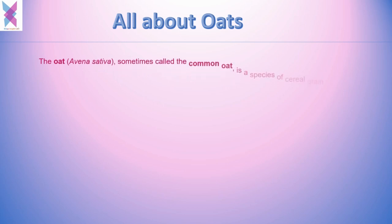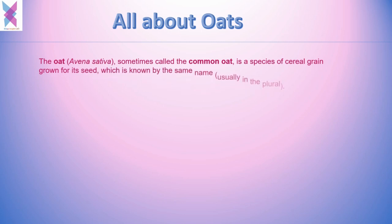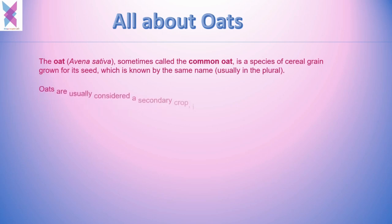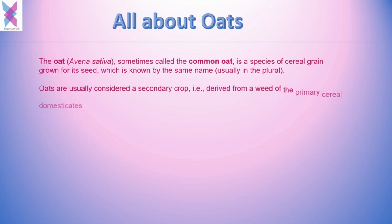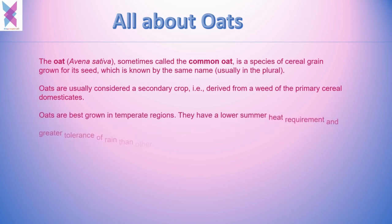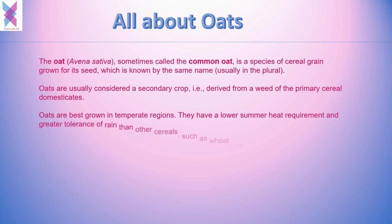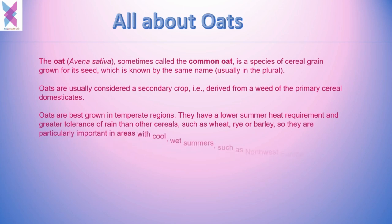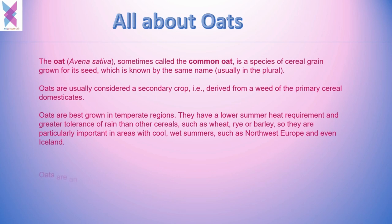The oat, or Avena sativa, sometimes called the common oat, is a species of cereal grain grown for its seed, which is known by the same name. Oats are usually considered a secondary crop derived from a weed of the primary cereal domesticates. They are best known in temperate regions, having a lower summer heat requirement and greater tolerance of rain than other cereals such as wheat, rye, or barley, making them particularly important in areas with wet, cool summers such as northwest Europe and Iceland.